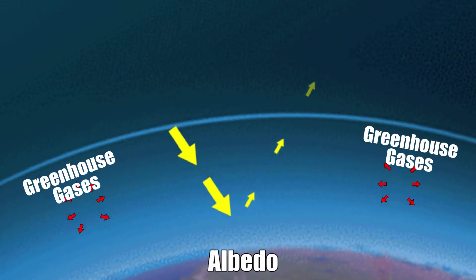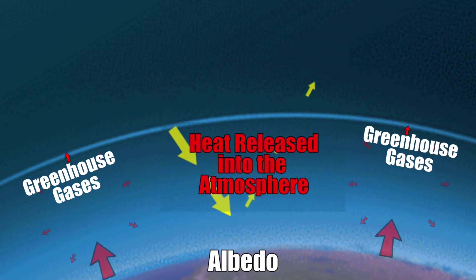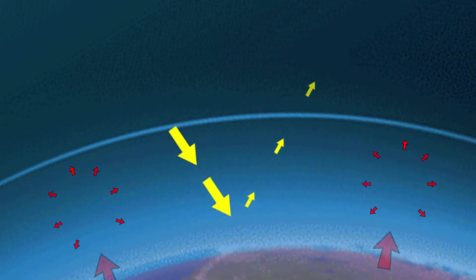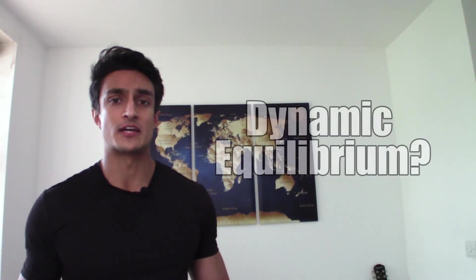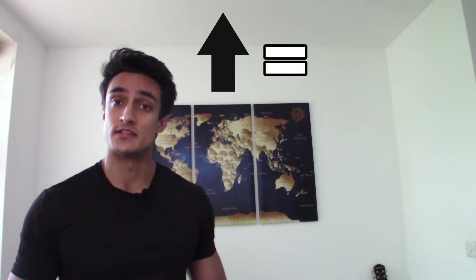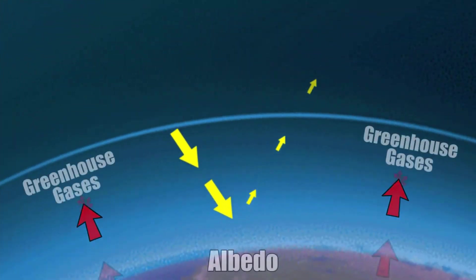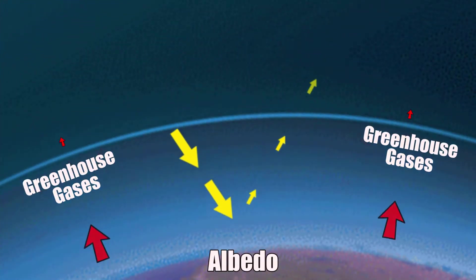Greenhouse gases emit heat in random directions. Some is lost to space, but much of it gets re-emitted back into the atmosphere or down towards the surface. This effectively reduces the proportion of energy escaping to space. But if greenhouse gases are reducing the amount of energy leaving the planet, then how do we get a dynamic equilibrium? Remember, that means the amount of energy leaving must equal the amount coming in. Well, all that extra energy trapped in the atmosphere also raises its temperature.